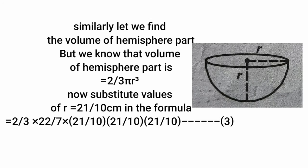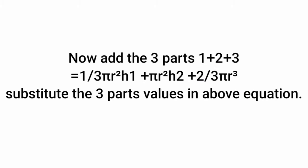Similarly, let us find the volume of the hemisphere part. Volume of hemisphere equals 2/3 π r³, which equals 2/3 × 22/7 × (21/10)³. Take it as equation 3. Now add the 3 parts: equation 1 plus equation 2 plus equation 3, which equals 1/3 π r² h1 plus π r² h2 plus 2/3 π r³.